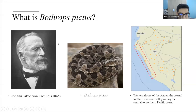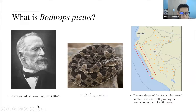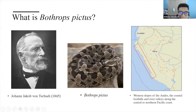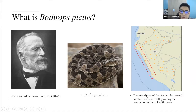First of all, what is Bothrops pictus? Described for the first time by Johann Jacob von Schutte in 1845 and commonly referred to as the desert lancehead, Bothrops pictus is a neotropical, medically important pit viper endemic to Peru. It is usually found on the western slope of the Andes, the coastal foothills, and river valleys along the central to northern Pacific coast of Peru.